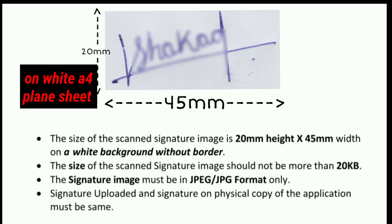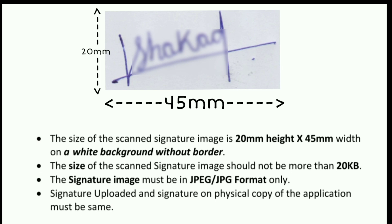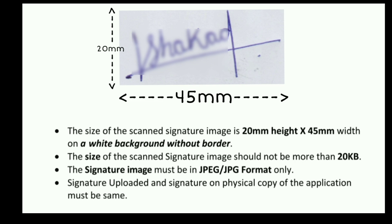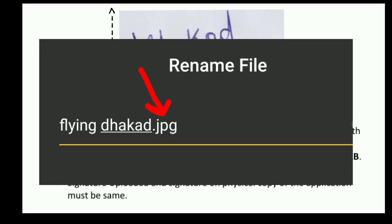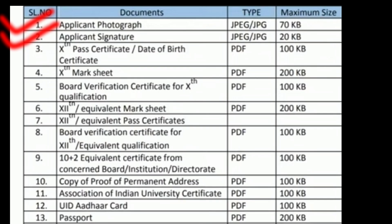The second document is the Applicant's Signature. Take a white A4-size plain paper, do a signature on it using a black or blue ballpoint pen, then get it scanned. Crop it to the given dimensions: 20 mm height and 45 mm width. The scanned signature must be less than 20 KB. The signature must be in JPEG or JPG format. The signature uploaded and the signature on the physical copy must be the same.